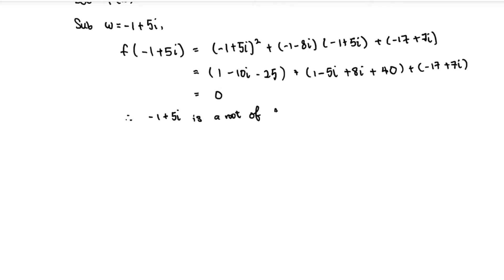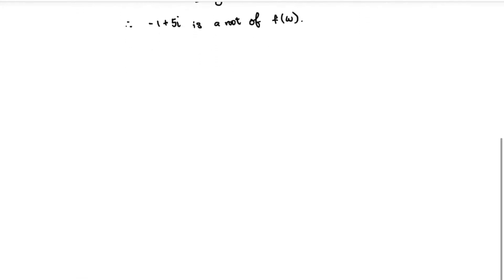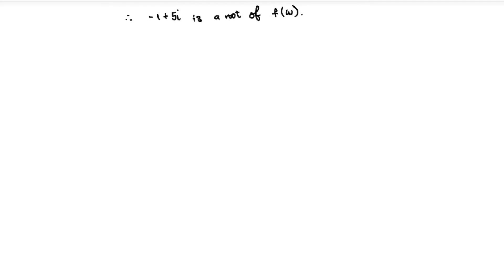For the next part — hence or otherwise find a second root — we need to find another root in the form p + iq. Let's denote this second root so we can work with it systematically.